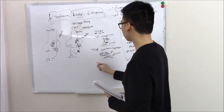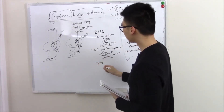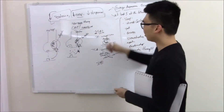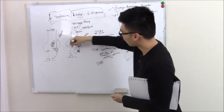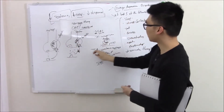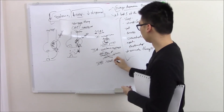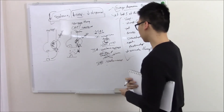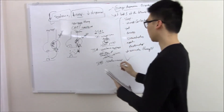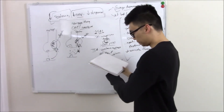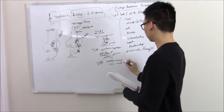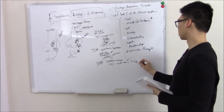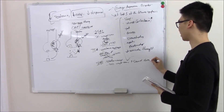Next up are SNRIs — serotonin-norepinephrine reuptake inhibitors. They block both serotonin and norepinephrine reuptake, so the mechanism is very similar to TCAs. The good thing is SNRIs are newer with a better side effect profile: less weight gain, and you can actually see increases in sexual drive for those worried about erectile dysfunction.